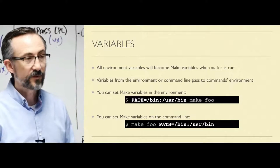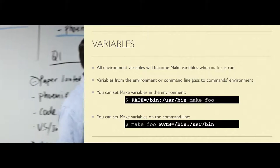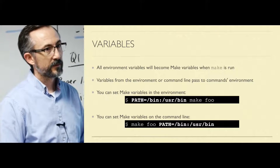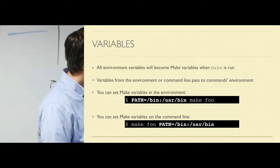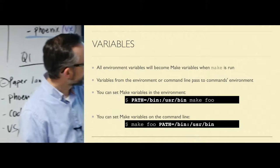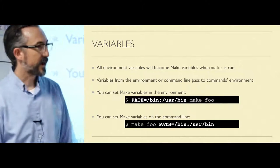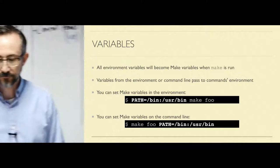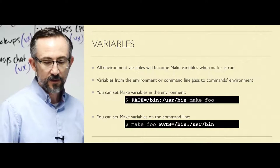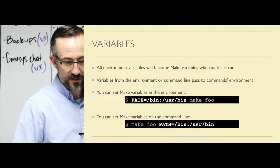You can set Make variables in the environment. Before I run make, I'm setting a shell environment variable PATH. Make will then see that, and its PATH inside of Make will be different than outside. Another way to do that is to send it in as a Make variable on the command line. These two look very similar — the syntax is very similar — but one references a Make variable and the other references an environment variable outside of Make. This is another thing that trips people up: the syntax is so close to shell, but it's not shell — it's Make.